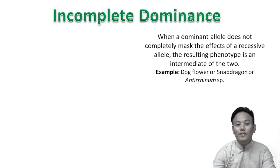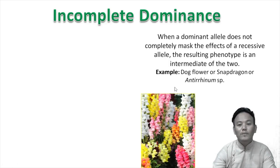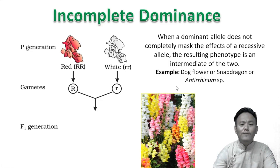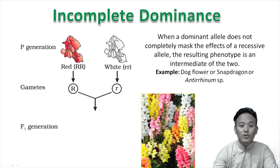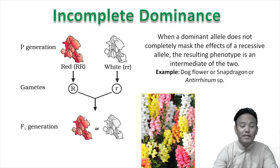One classical example of incomplete dominance is the dog flower, also called snapdragon or Antirrhinum species. Let's say we have two plants — one producing red flowers and one producing white flowers. When these two are crossed, if Mendel's law of dominance were true, the F1 generation offspring should have been either all red or all white depending on which trait was completely dominant.